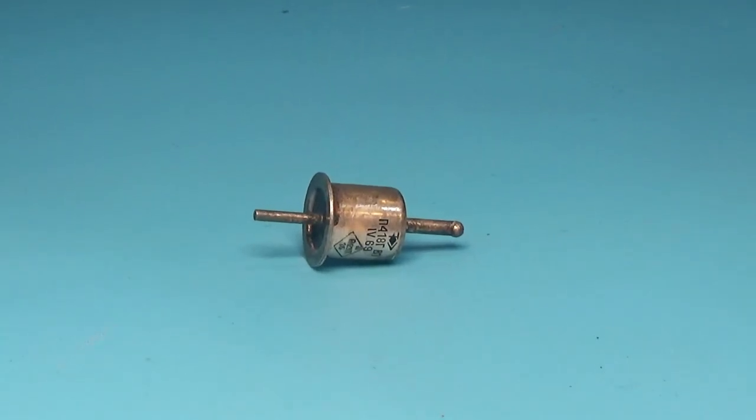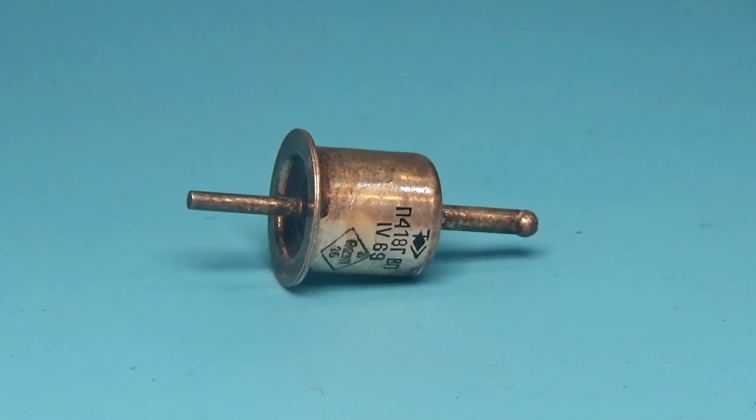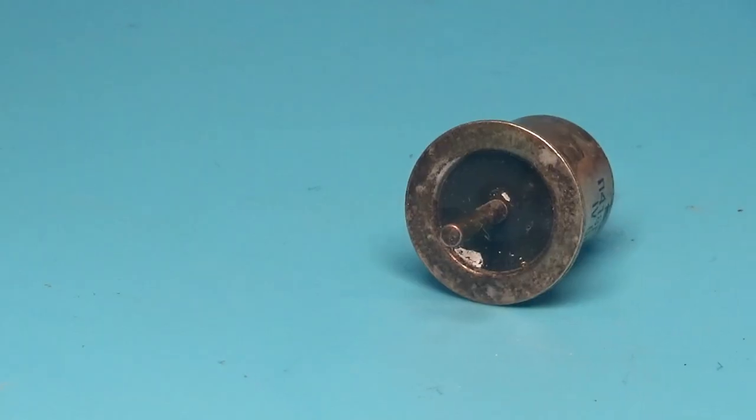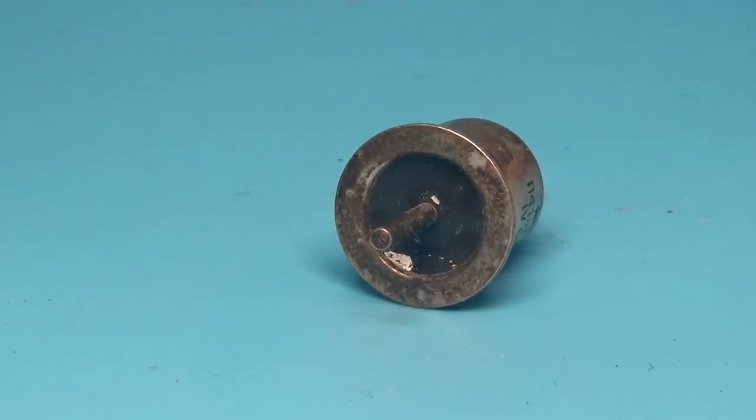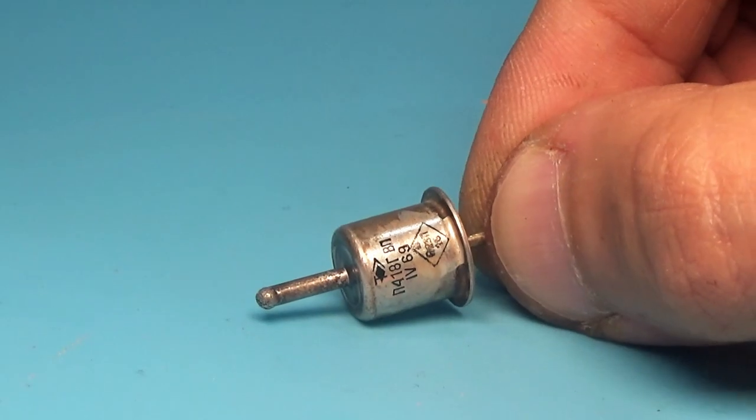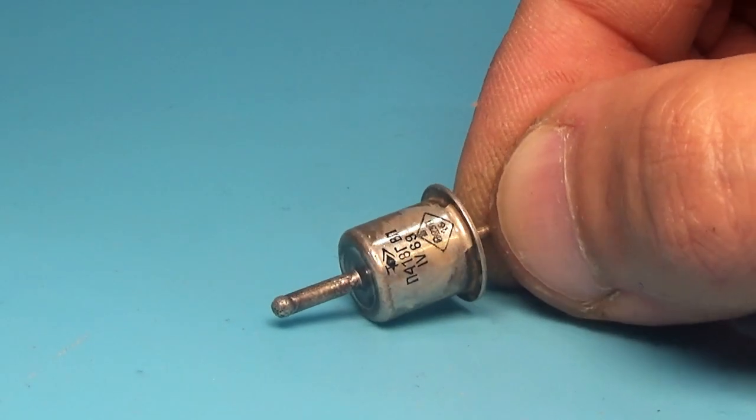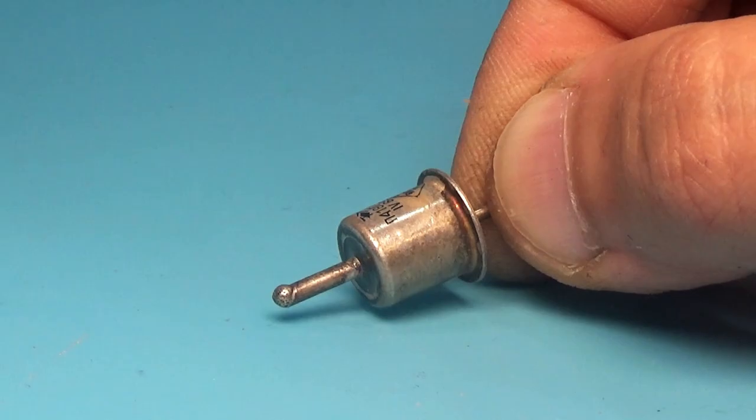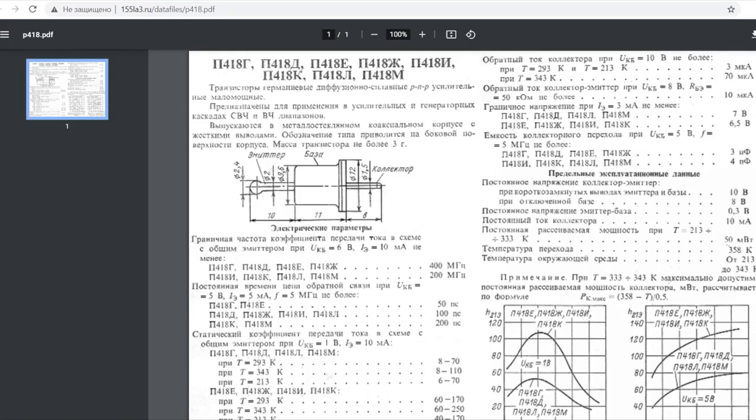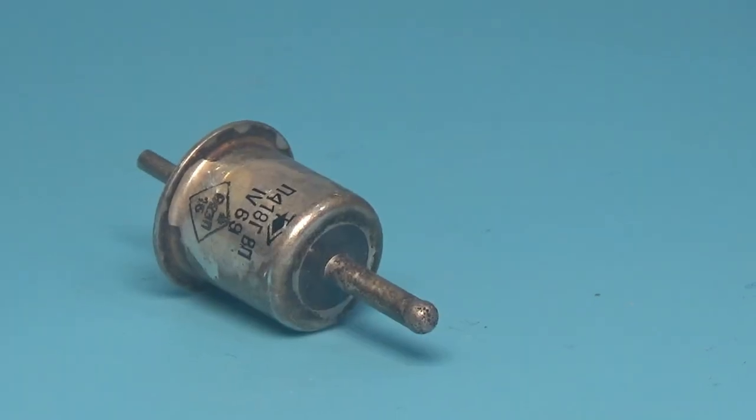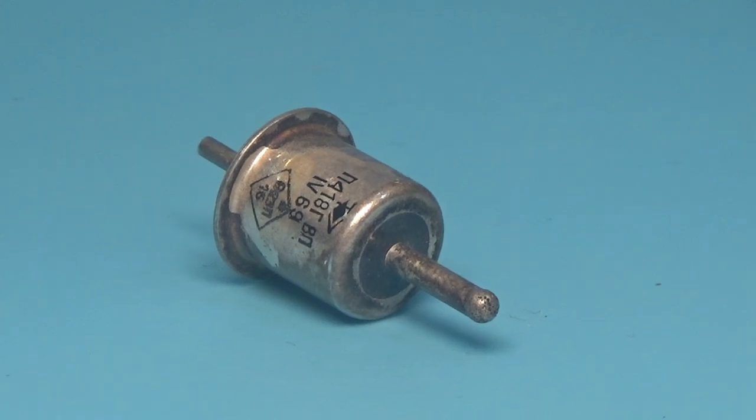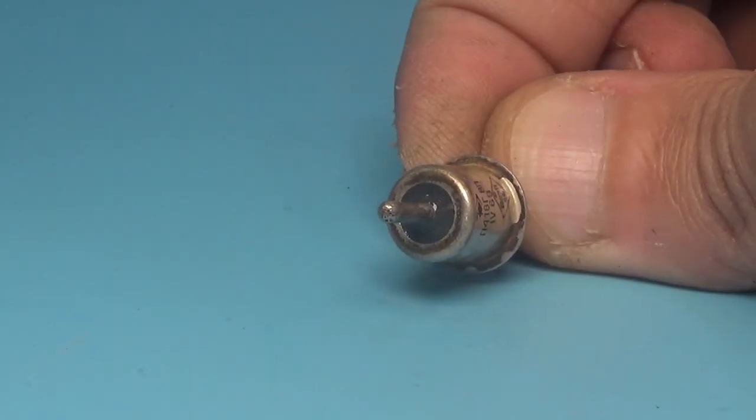It is also germanium PNP transistor, and it is unusual not only in design, but also in characteristics. It is ultra-high frequency transistor that could operate at frequencies of 200 to 400 megahertz, depending on the index. The constant collector emitter voltage is only 10 volts, the collector current is only 10 milliampers, but despite this they were used due to their speed. The case is probably covered in silver, and oddly enough, it is the base.